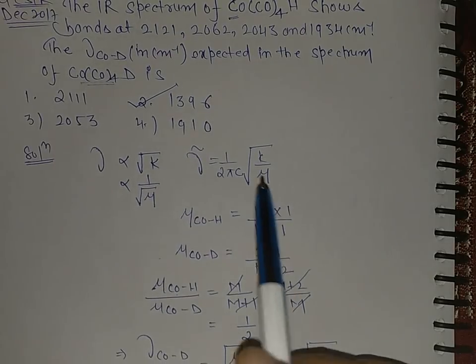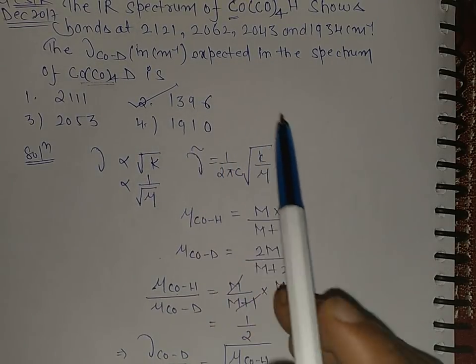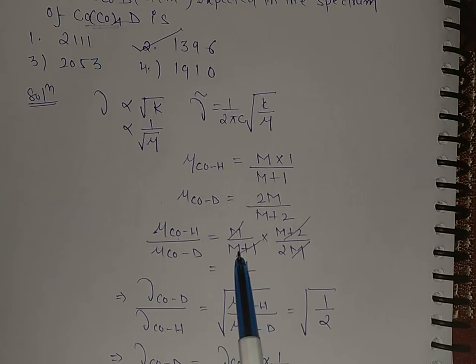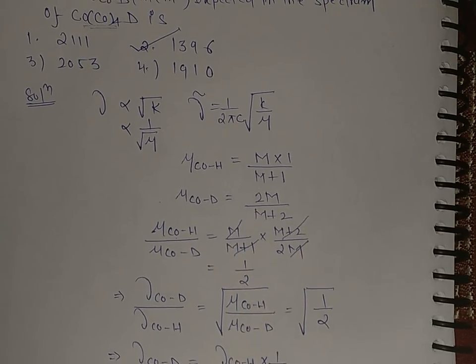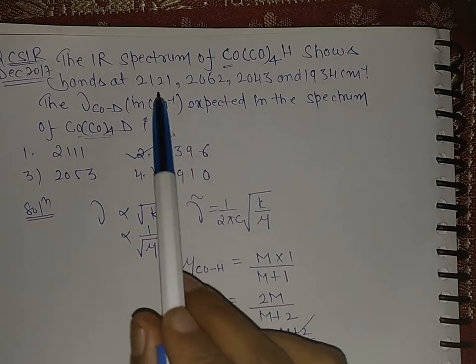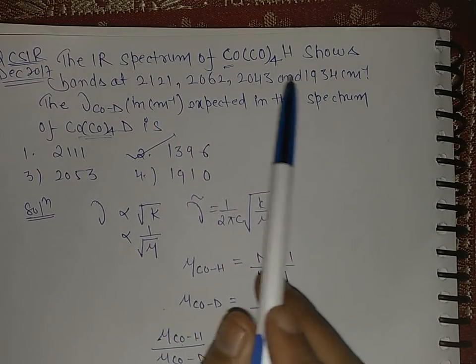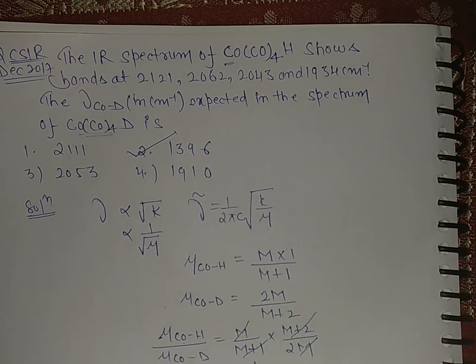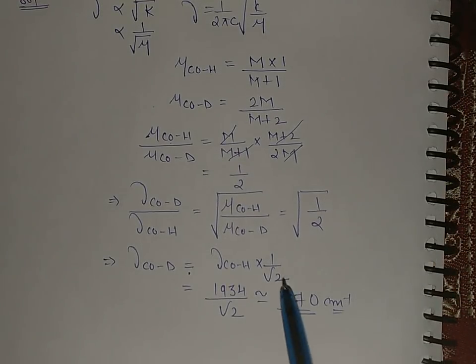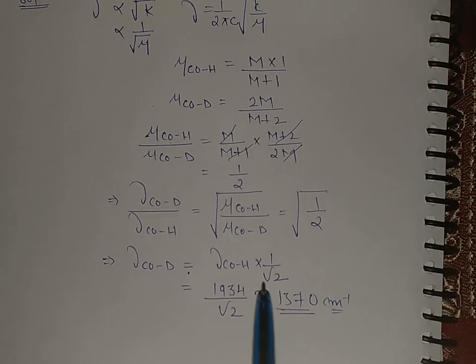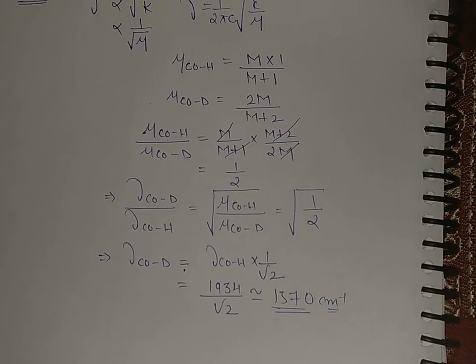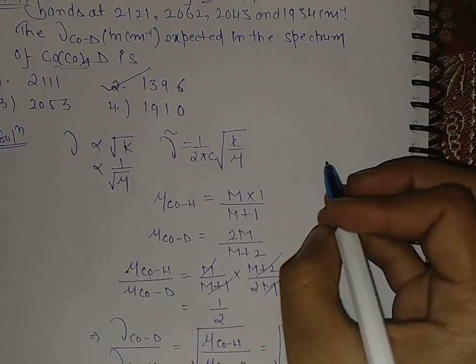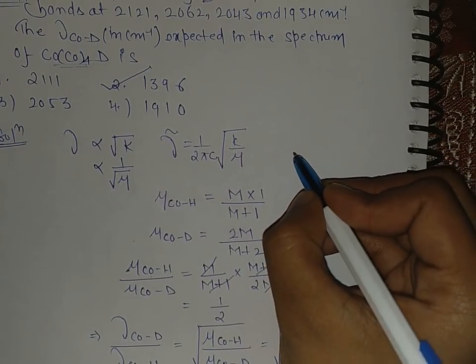And if you want exact value, then take the mass of cobalt here and then divide it accurately, and after that take the average of these values. Add them all and divide by 4, then put in the formula.